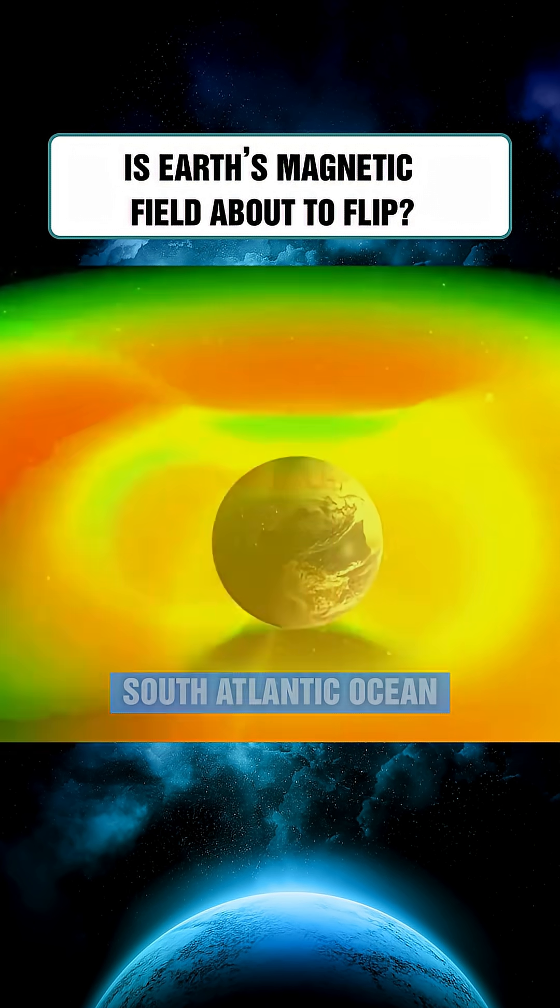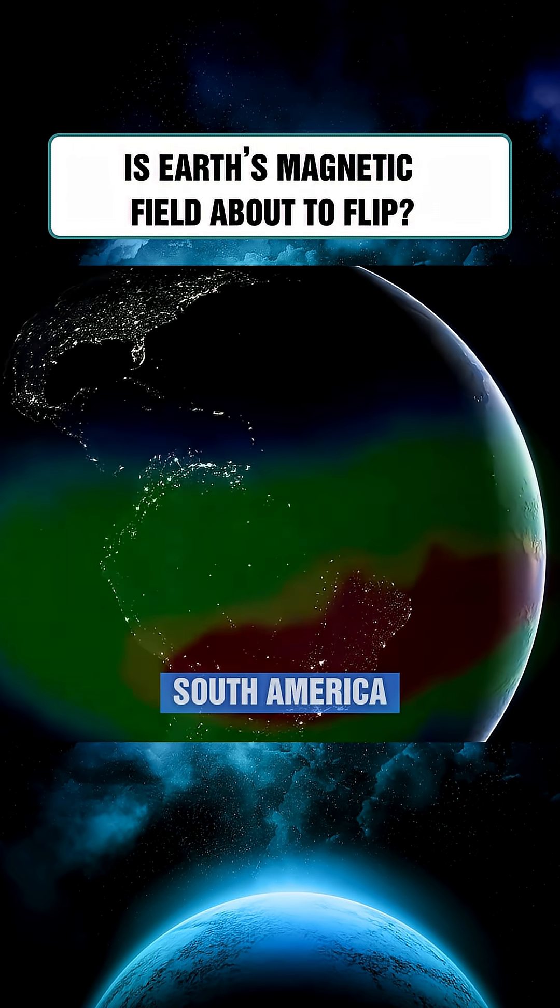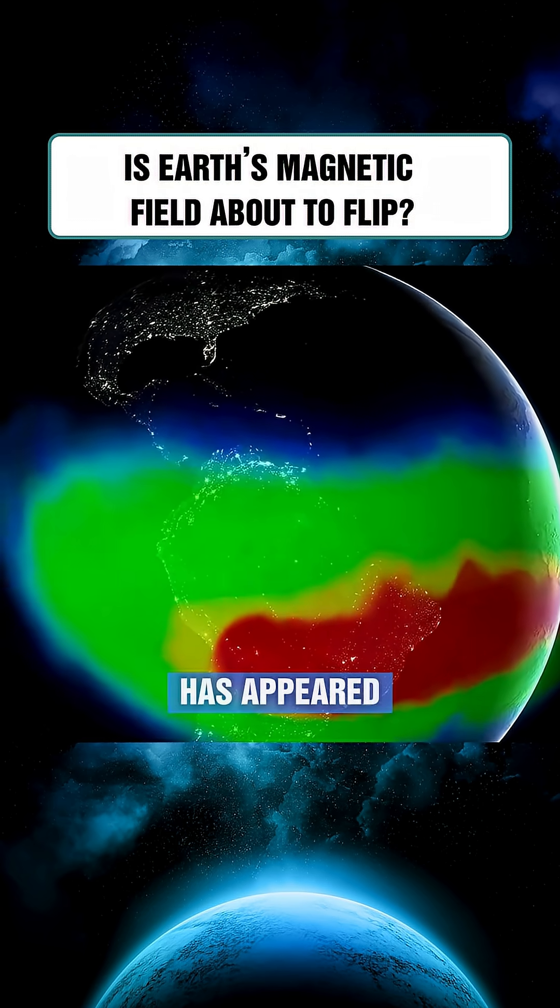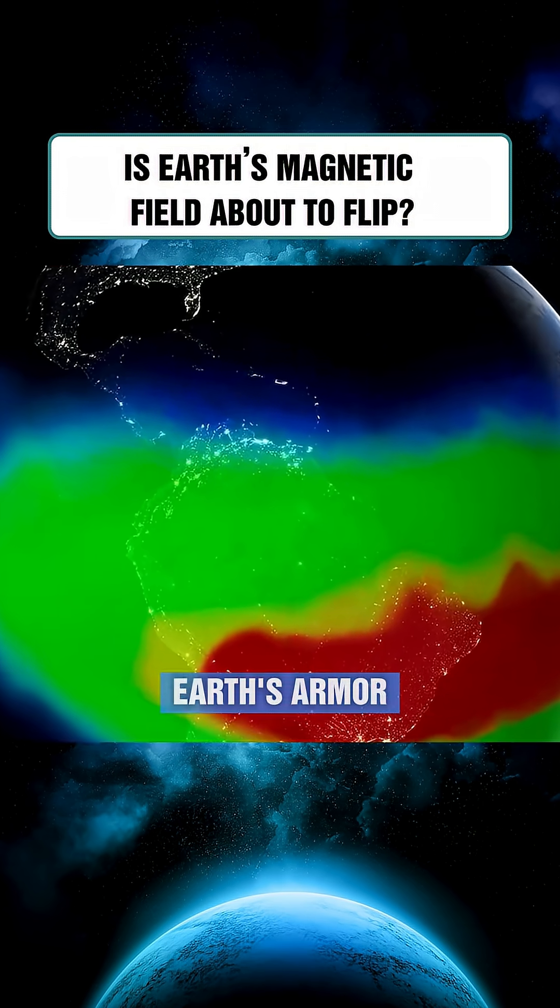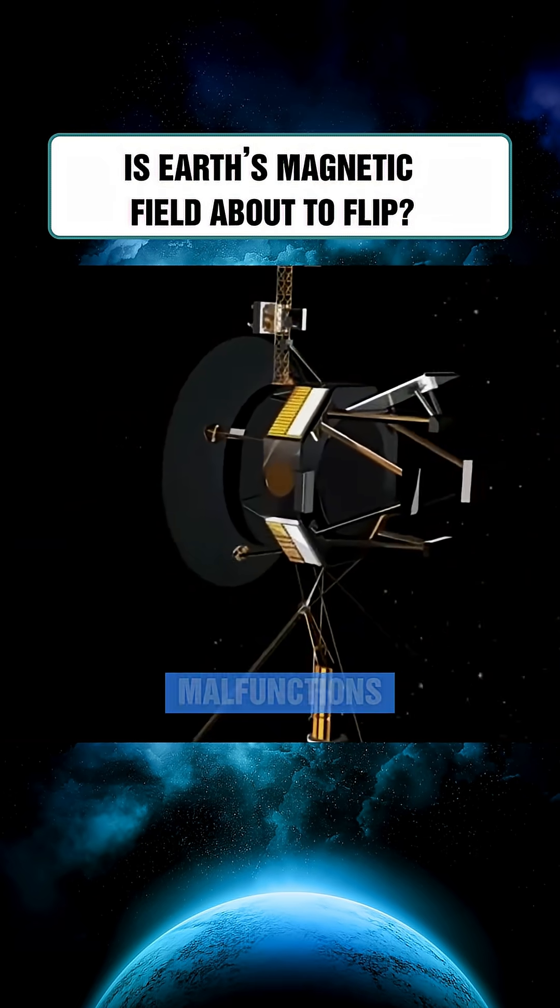Over the South Atlantic Ocean, an unusual weak spot in the magnetic field, stretching from South America to Africa, has appeared, resembling a dent in Earth's armor. Satellites passing through this region often suffer from electrical malfunctions.